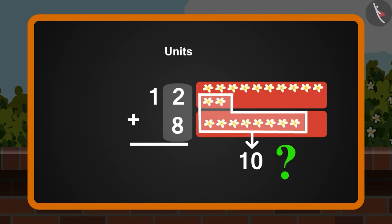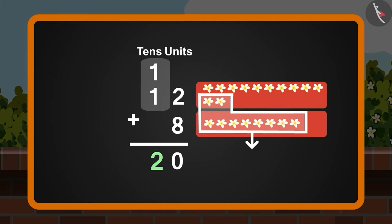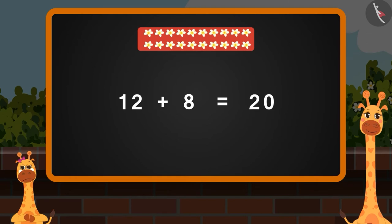But how do I write 10 in the unit section mom? Gaffy, for this we will write the number 0 from 10 under the unit section like this. Now we will take the 1 as a carry over and write it on top of the tenth section like this. Now let's add the numbers in the tenth section. 1 plus 1 from the carry over is equals to 2. We will write it like this under the tenth section.